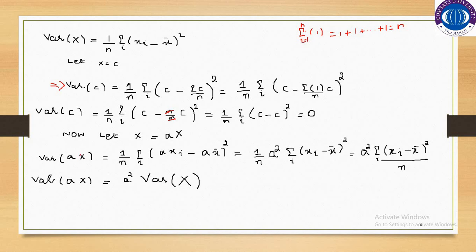The other properties can be proved in a similar way, both mathematically and numerically. To prove numerically, just take some variable x with some observations, multiply by a constant a — it could be 5, 10, 15, or any fixed number — and verify that the left-hand side equals the right-hand side. This task is for you to complete, similar to how we proved properties of the mean. The same method can be used here.